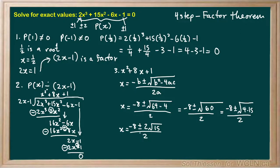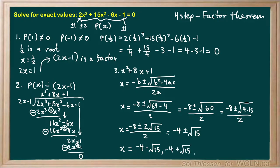So the negative 8 reduces to negative 4, and the plus or minus 2 reduces to plus or minus 1, leaving us with negative 4 plus or minus the square root of 15. Keep in mind we also found earlier that x equals 1/2. So putting all our solutions together: x equals negative 4 minus the square root of 15, negative 4 plus the square root of 15, and 1/2. These are the three solutions to this equation.